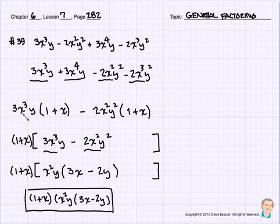From the first two terms, because this is one of those four things, we could do it by grouping. We could factor out a 3x cubed y, which leaves us with a 1 plus x. We could factor out a 2x squared y squared, which also leaves us with a 1 plus x. So we can factor out that 1 plus x.